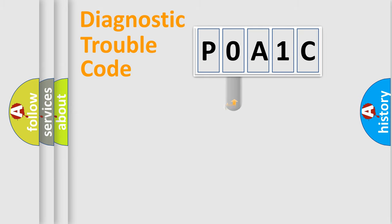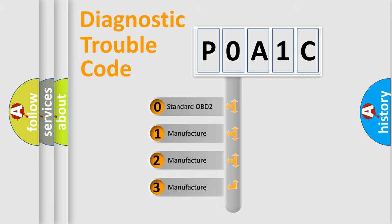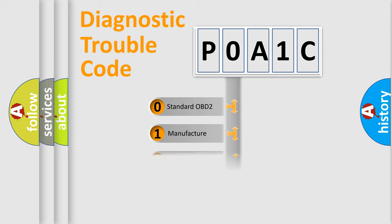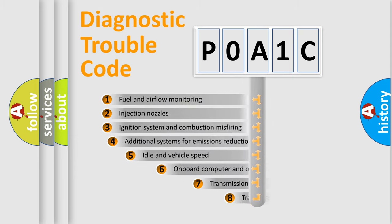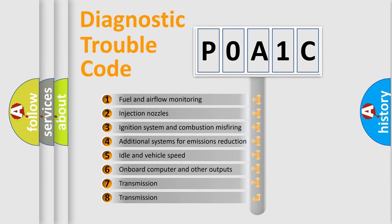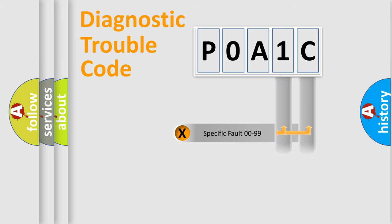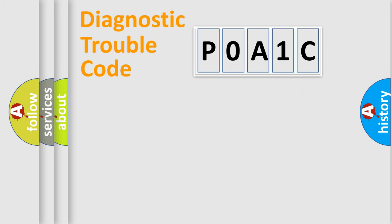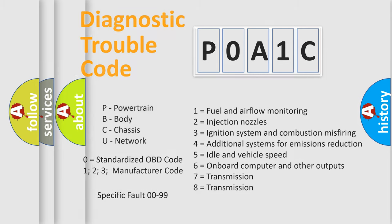This distribution is defined in the first character of the code. If the second character is expressed as zero, it is a standardized error. In the case of numbers 1, 2, or 3, it is a manufacturer-specific error. The third character specifies a subset of errors. Only the last two characters define the specific fault of the group, and this division is valid only when the second character is zero.